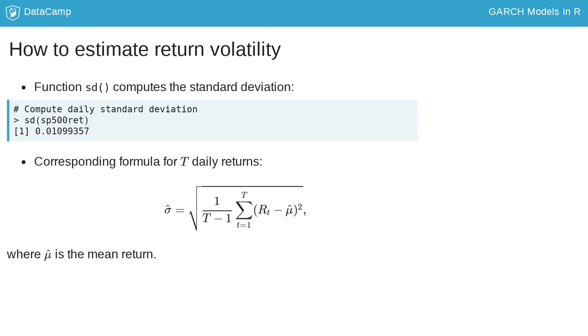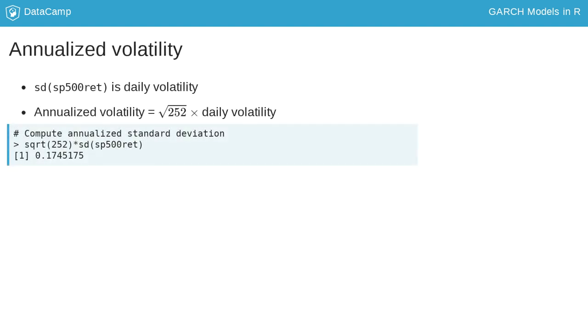The underlying formula is that the standard deviation equals the square root of the average squared deviation of the return from its mean. Financial traders annualize the daily volatility by multiplying it with the square root of the number of trading days in a year, namely 252.